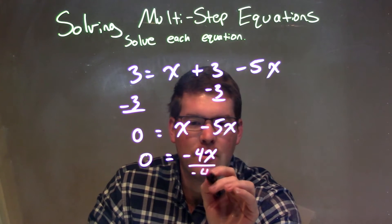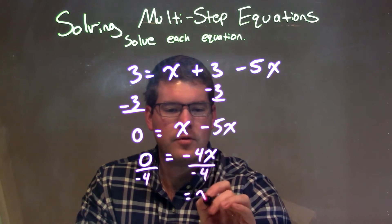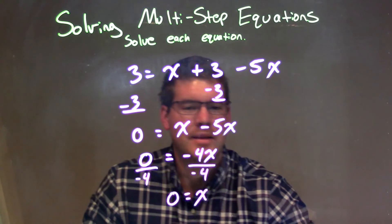I'm going to divide by negative 4 to both sides. If I divide by negative 4 to both sides, I have x by itself on the right and 0 divided by negative 4 is a 0 on the left.